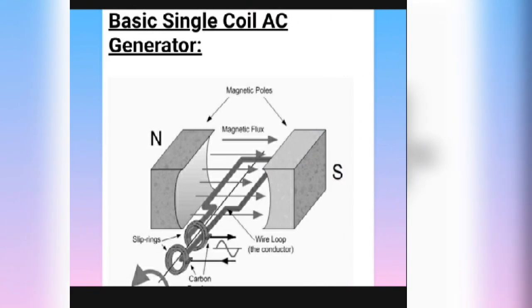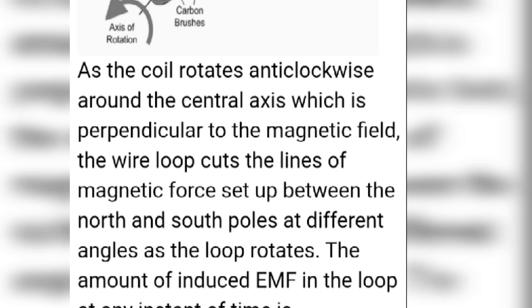Here is a picture showing the basic single coil AC generator. It has magnetic poles — a north pole and a south pole — with magnetic flux between them. There is a conductor or wire loop inside. The components also include slip rings, carbon brushes, and the axis of rotation. The arrow shows the direction of the magnetic field, which can be cut according to the turning of the coil.